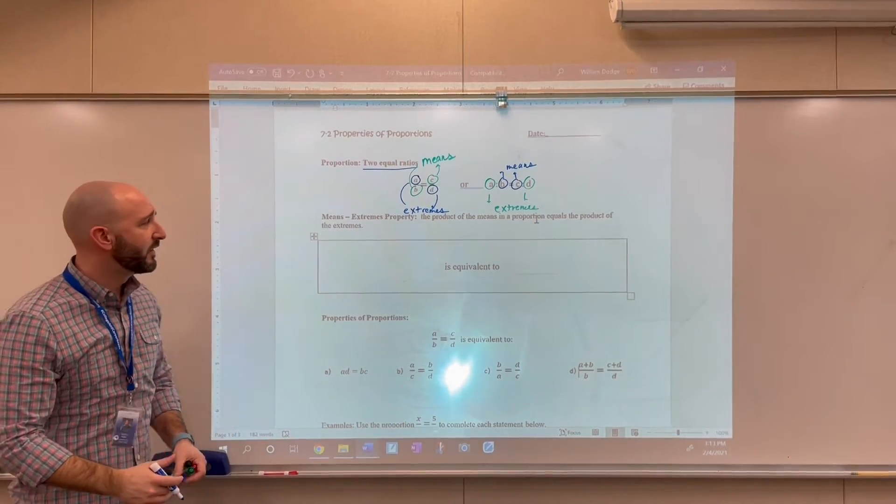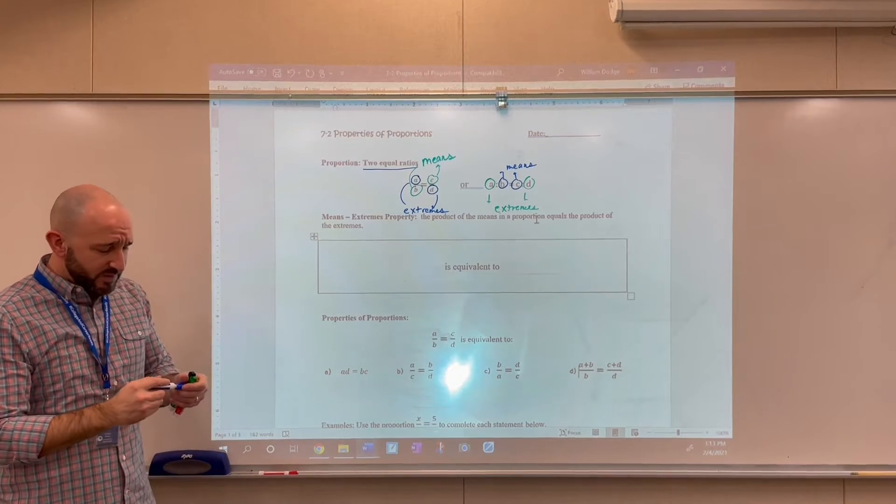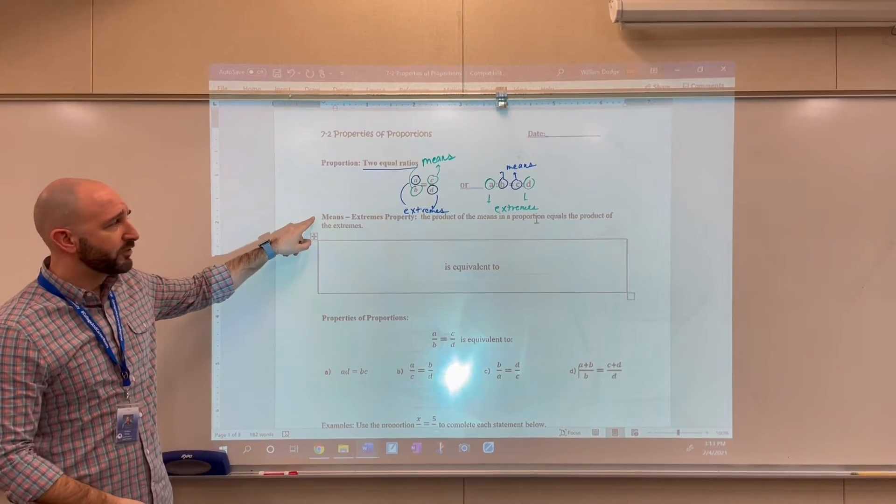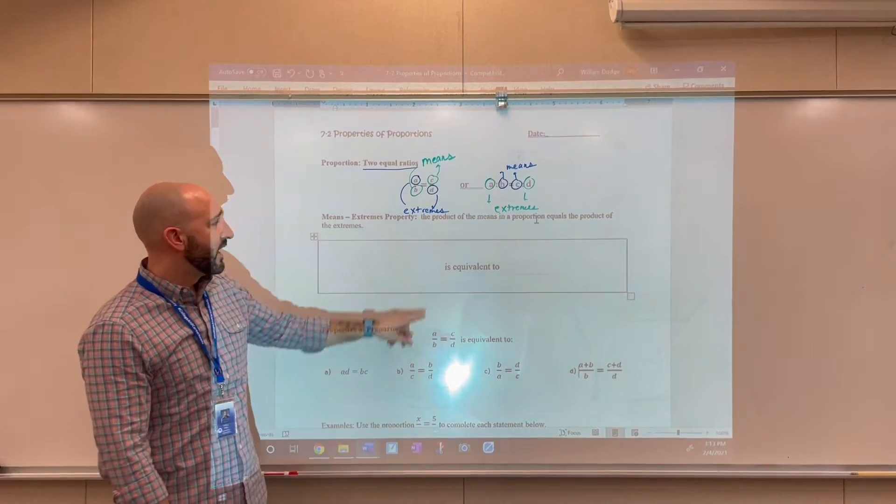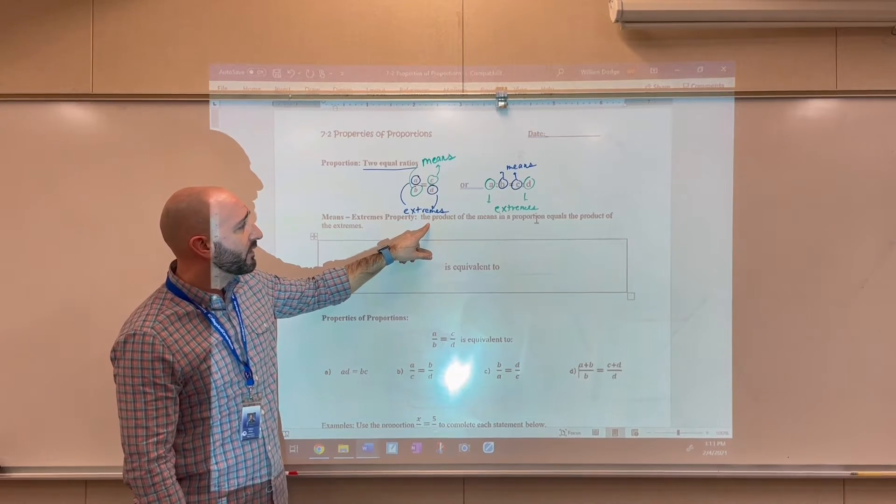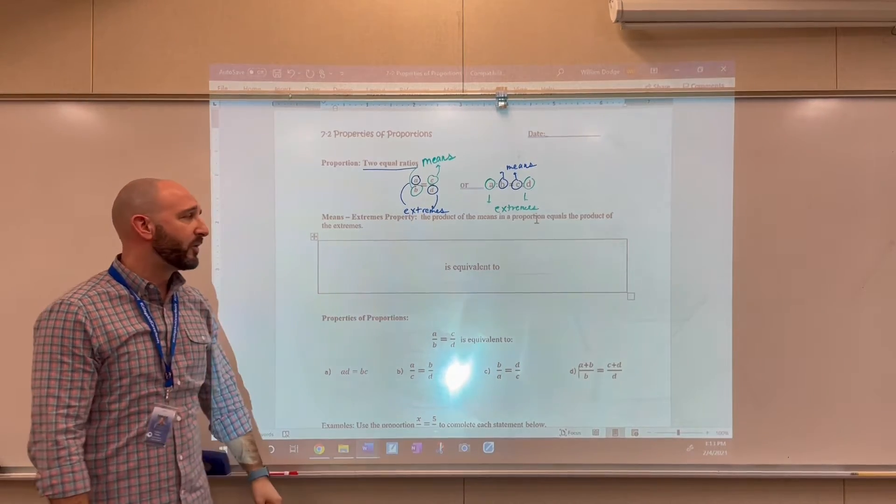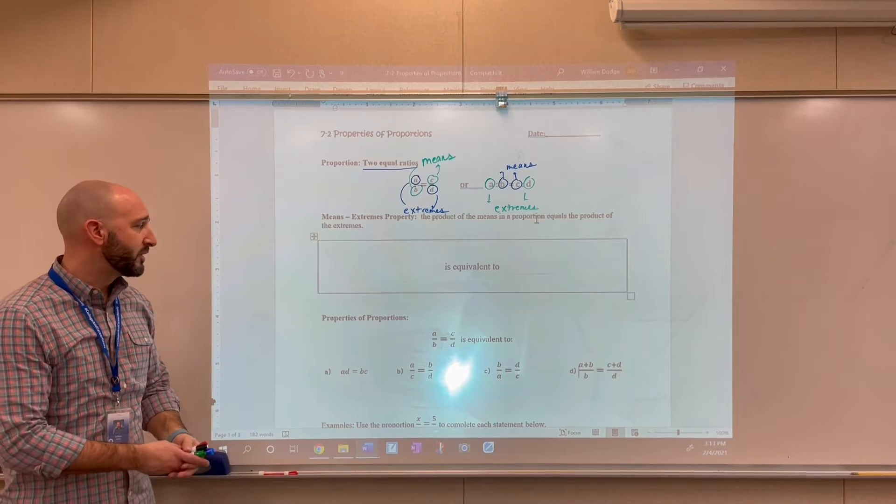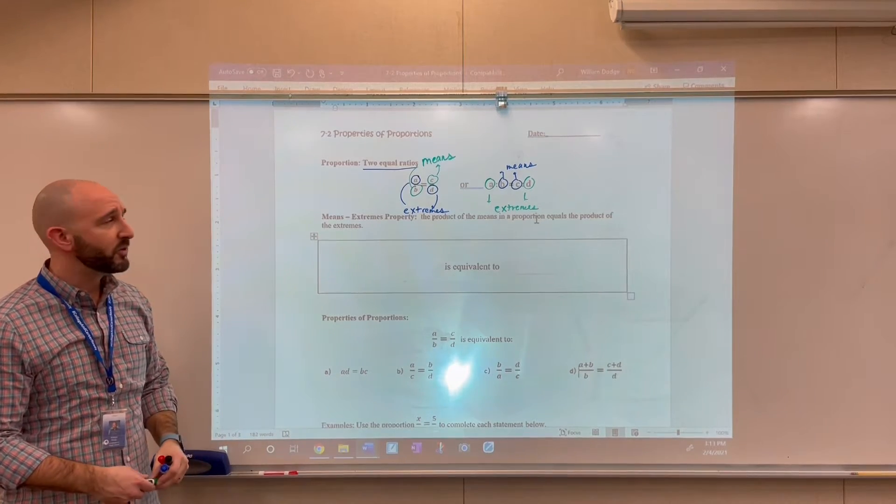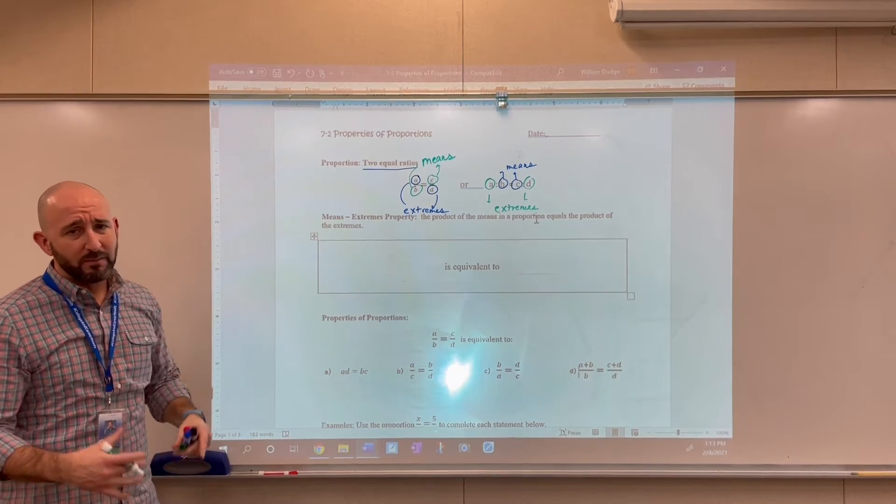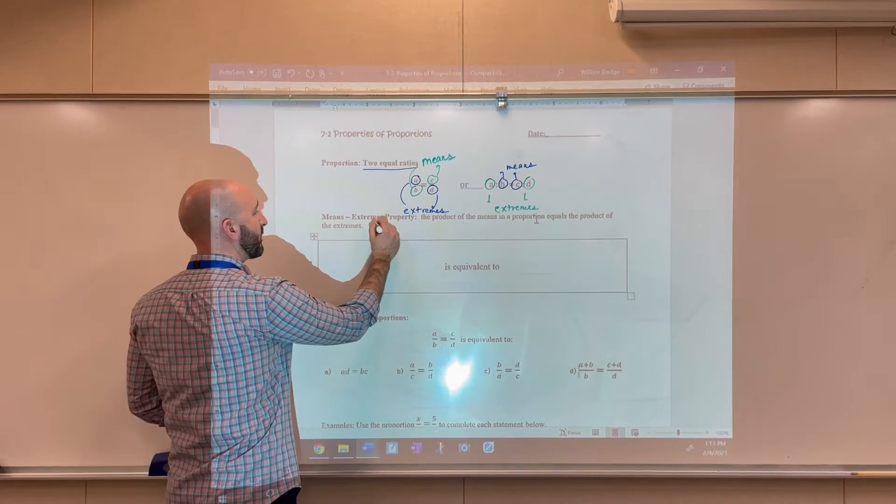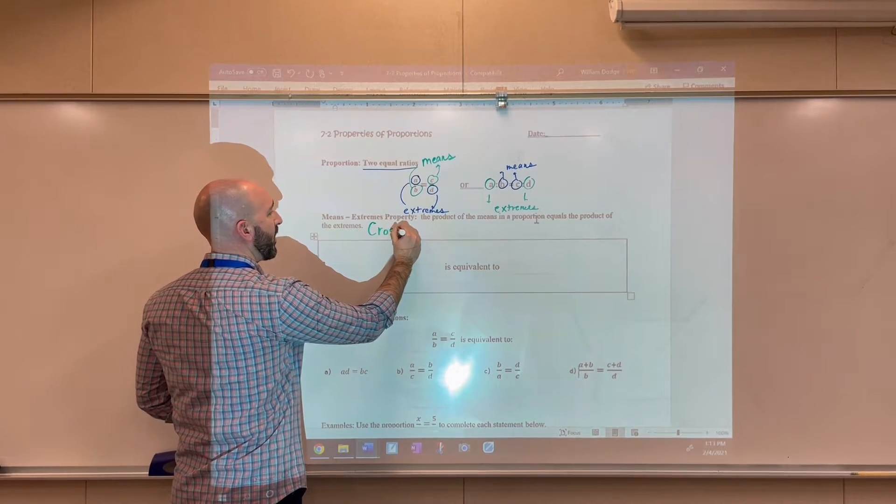All right, now it's important that we understand that terminology, because if we take a look here, we have the means and extremes property, which says that the product of the means in a proportion equals the product of the extremes. So the product of the means equals the product of the extremes. And most of the time, you're going to hear this referred to as the cross-product property.